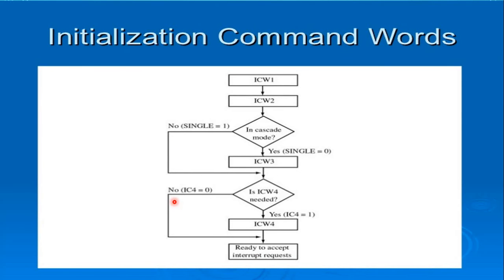The 8259 requires two types of command words: initialization command word ICW and operational command word OCW. The 8259 can be initialized with four ICWs; the first two are compulsory and the other two are optional based on modes used. The flow chart shows: ICW1 and ICW2 are compulsory. Then check whether it is cascaded mode or single operation. If cascaded, go to ICW3; otherwise skip ICW3 and move directly to ICW4.